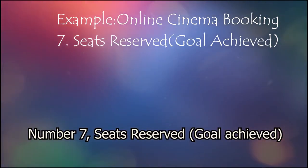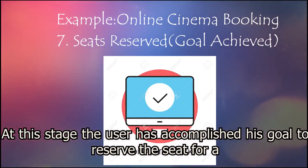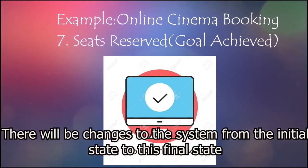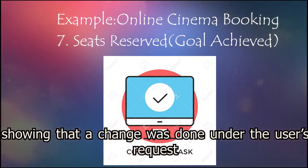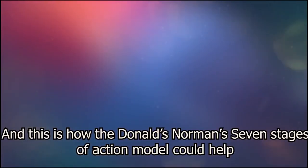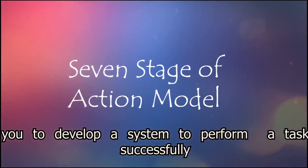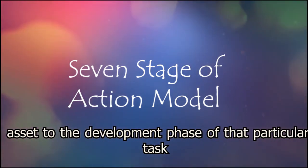Number 7: Seat reserved — goal achieved. At this stage, the user has accomplished his goal to reserve the seat for a movie in the cinema. There will be changes to the system from the initial state to the final state, showing that a change was made under the user's request. And this is how Donald Norman's 7 Stages of Action model can help you develop a system to perform a task successfully. This could be used for any app, product, or system, and it would be a great asset for the development phase of a particular task.